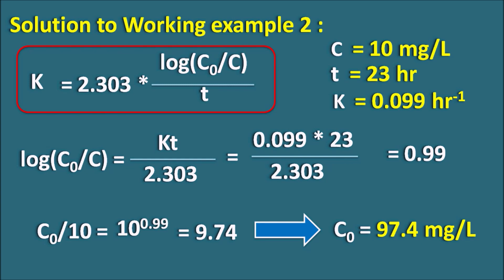By using these two equations — k equals 2.303 times log(C0/C) divided by t, and t-half equals 0.693 divided by k — we can calculate kinetic parameters in first order kinetics. In our next video we will cover more examples in first order kinetics as well as calculations for zero order kinetics. Thank you for watching.